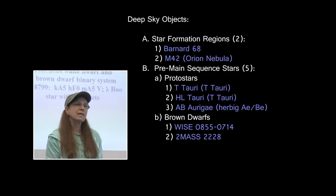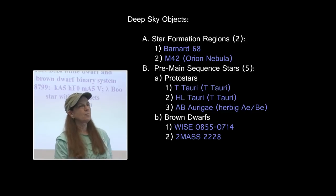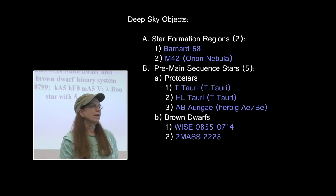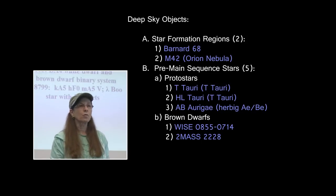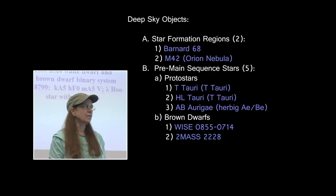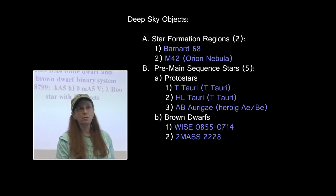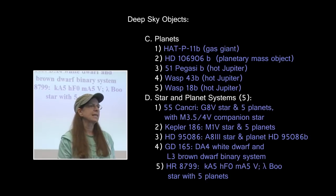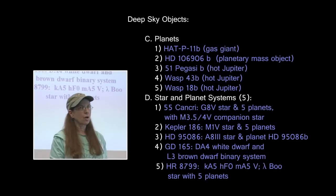If you take those deep sky objects and rearrange them into similar groups, we have two star formation regions, five main sequence stars of which three are protostars and two are brown dwarfs, five individual planets, and five star-and-planet systems.